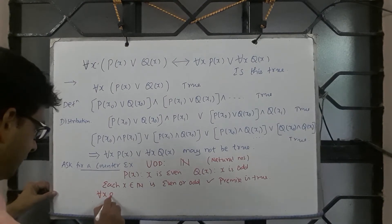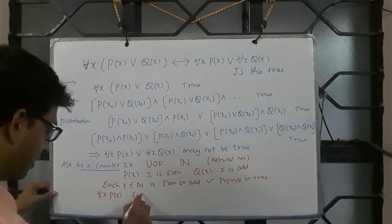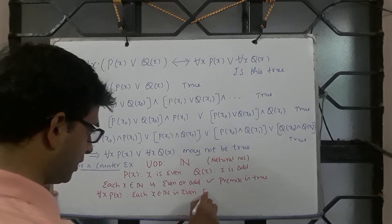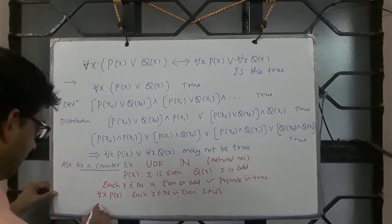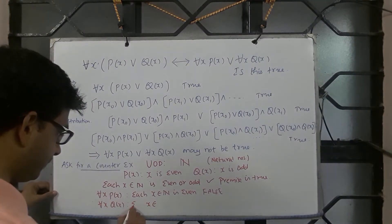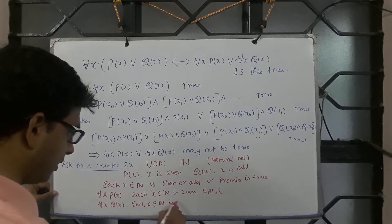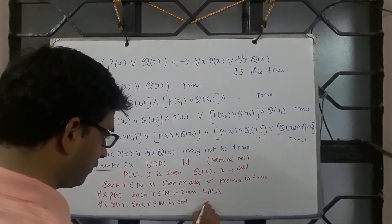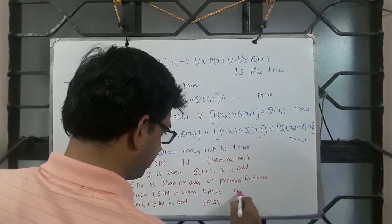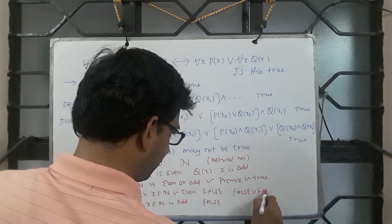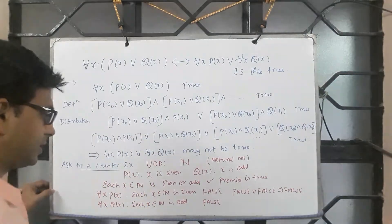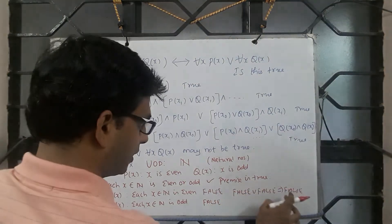Look at the conclusion. Conclusion says for all x P(x) or for all x Q(x). This says each x belongs to N is even, which is false. Similarly, for all x Q(x) says each x belongs to N is odd, which is false. So if it is false, if it is false, false or false is also false.